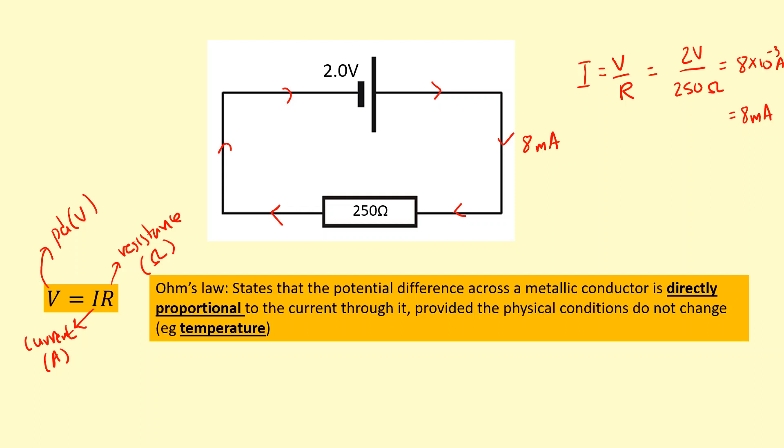Ohm's law also lets us define resistance. So the formal definition of resistance, which isn't too important, is just potential difference divided by current in this equation here. That's the definition of resistance.